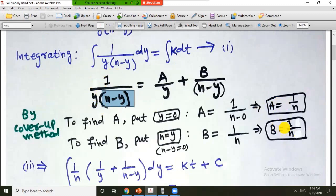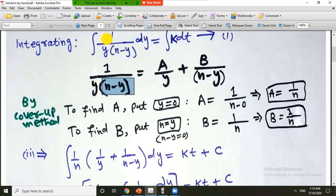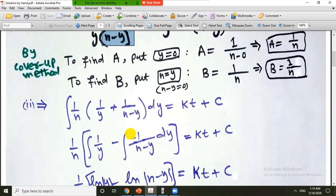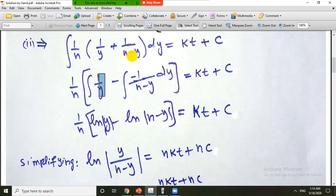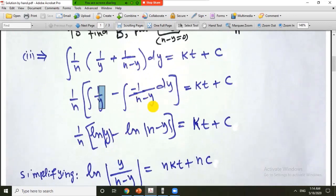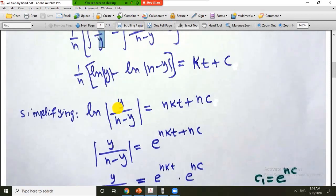So both a and b are equal to 1 over n. Putting the values of a and b and then integration is simple. Integral of 1 over y is natural log of y. Integral of minus 1 over n minus y is natural log of n minus y. Now simplifying.